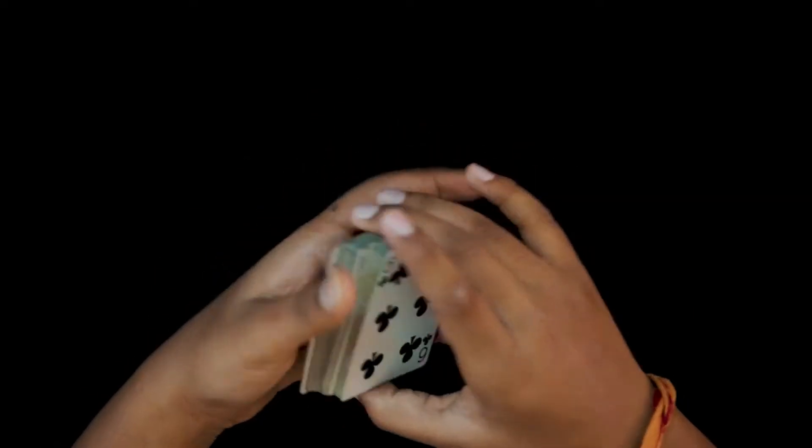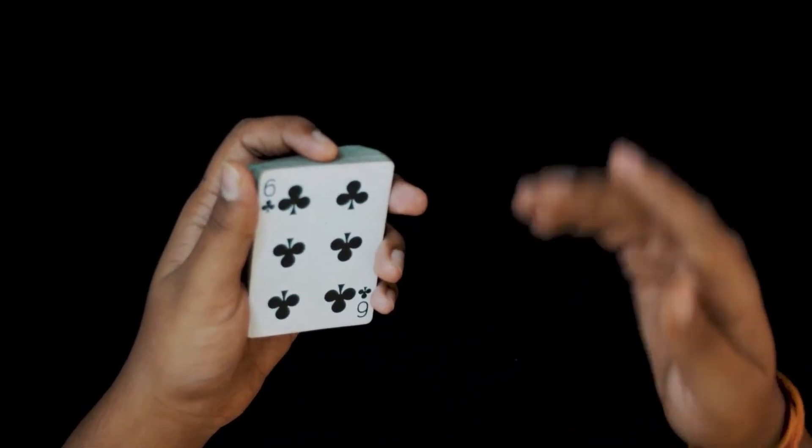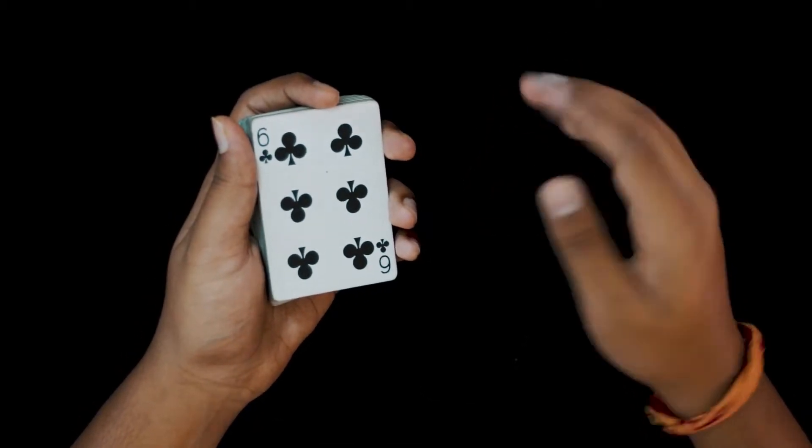Now once you have these 52 cards, you're gonna start with the trick. You're gonna start off by saying that I'm gonna make some random piles, but these are gonna be really specific piles.